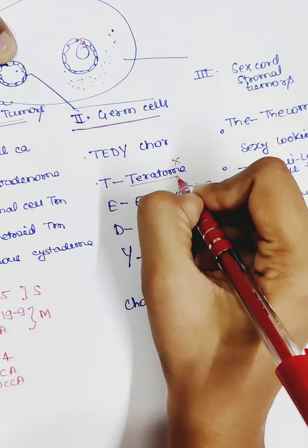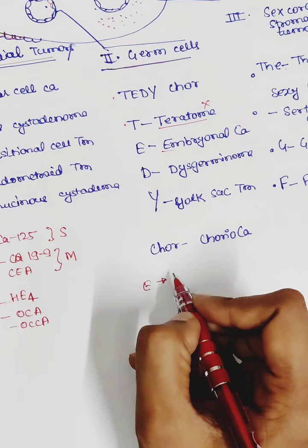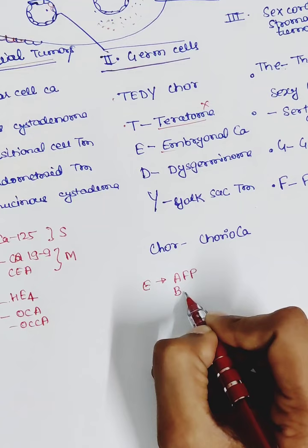Tumor markers of embryonal cell carcinoma. In the embryo we study A, B. So in the embryonal cell carcinoma tumor markers are A and B, alpha-fetoprotein and beta-hCG.